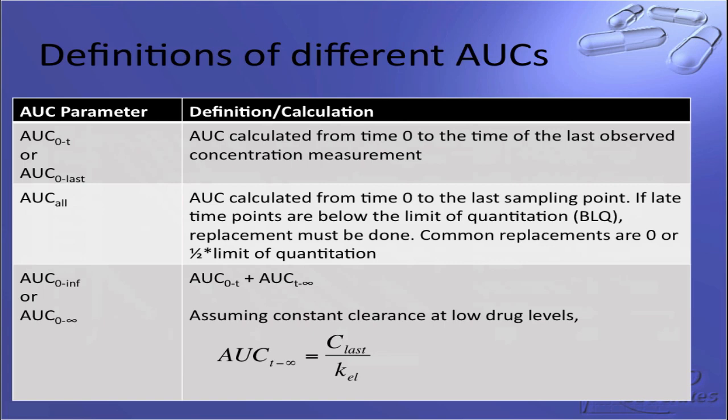Now that you know how to calculate AUC, let's review the definitions. AUC zero to t, or AUC zero to last, is the AUC calculated from time zero to the time of the last observed concentration measurement. All samples below the limit of quantitation at the end of the curve are ignored. AUC all is similar, but extends to the last sampling point, not just the last observed concentration. This means that terminal time points with measurements below the limit of quantitation must be replaced with another value. Common replacements are zero and one half the limit of quantitation. Finally, AUC zero to infinity is the sum of AUC zero to t and AUC t to infinity. Assuming constant clearance and low drug levels at the end of the concentration time curve, the AUC t to infinity is calculated as C_last divided by the terminal elimination rate constant. Also, AUC zero to infinity is also known as the exact AUC when the concentration time equation is known and solvable.